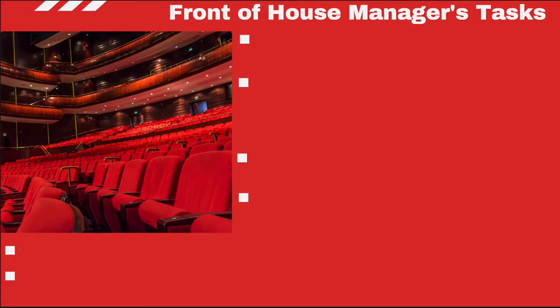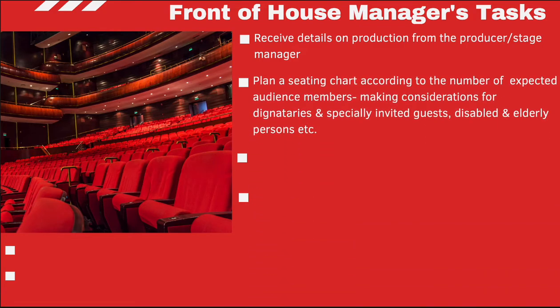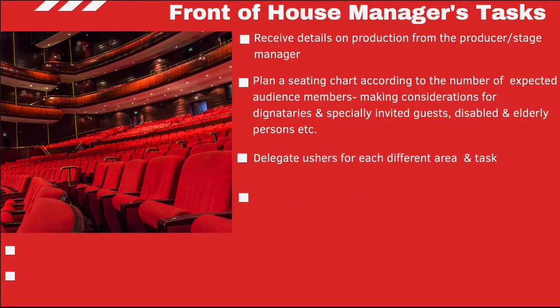So what kinds of things does a front of house manager do? First, they receive details on the production from the producer or stage manager. They then plan a seating chart, being very familiar with the auditorium seating, and look at how many people are expected to attend, including specially invited guests, disabled or elderly patrons, and children. They plan the seating accordingly and then delegate ushers for each area and task.